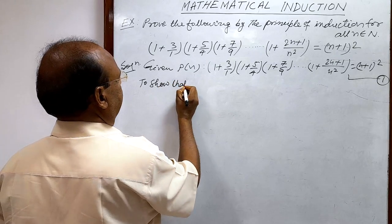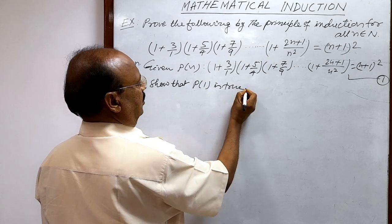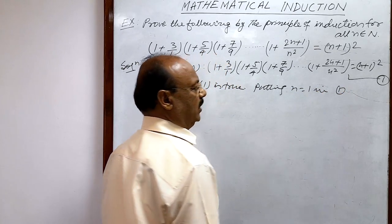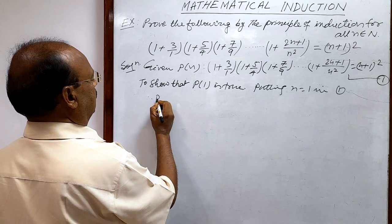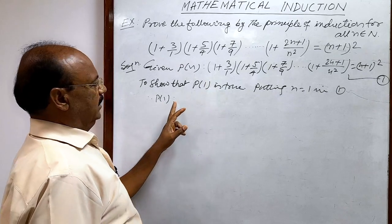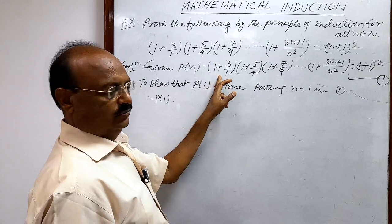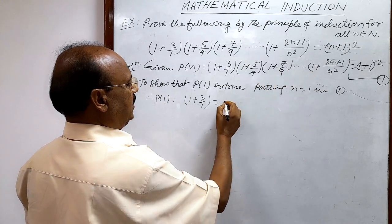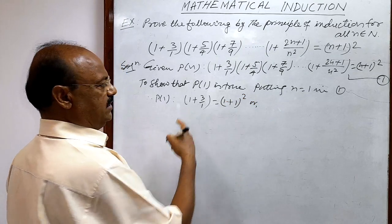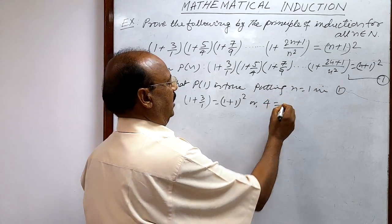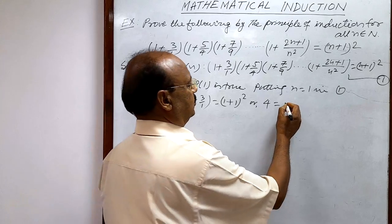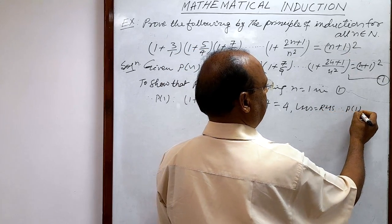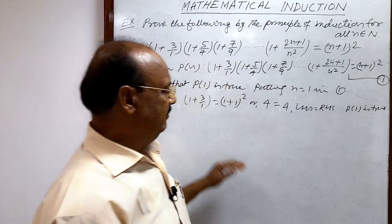To show P(1) is true: putting n equal to 1 in relation number 1 gives P(1). With n equal to 1 we take only one term, so the left hand side is 1 plus 3 by 1, and the right hand side with n equal to 1 is 1 plus 1 whole square. Simplifying: LHS is 1 plus 3 equals 4, and RHS is 2 squared equals 4. So LHS equals RHS, therefore P(1) is true. First step is complete.